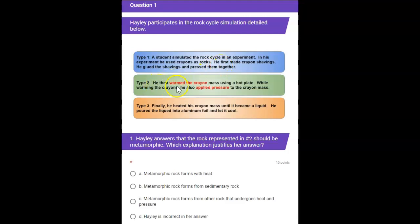For Type 2, he then warmed up the crayon mass using a hot plate. While warming the crayons, he also applied pressure to the crayon mass.